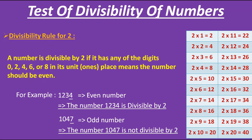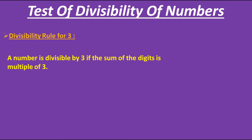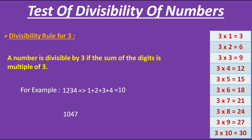Now let's move to the next divisibility rule, that is for 3. It says that a number is divisible by 3 if the sum of the digits is a multiple of 3. The sum of the digits of that number must be a multiple of 3, then that number is divisible by 3. Let's take examples. As per the rule, let's add the digits of the number: 1 + 2 + 3 + 4 gives us 10, which is not a multiple of 3 — we have 9 and 12 as multiples of 3, but not 10. Therefore, the number 1234 is not divisible by 3.